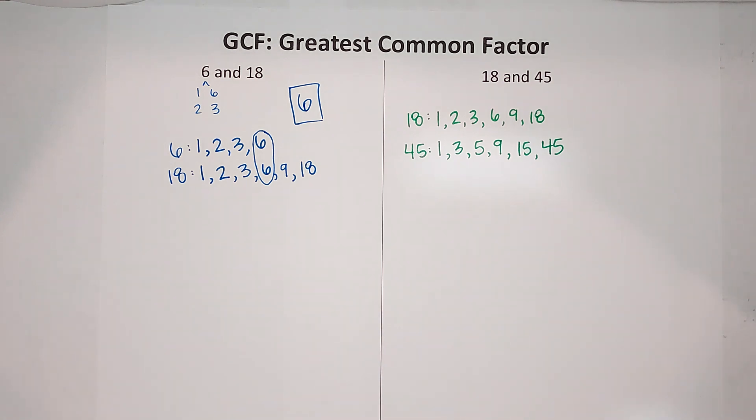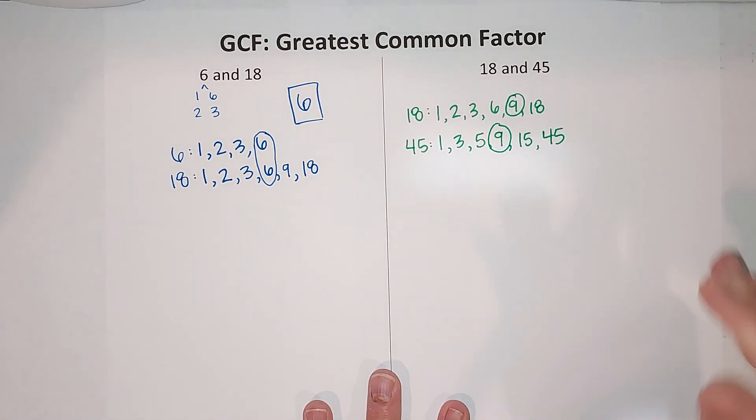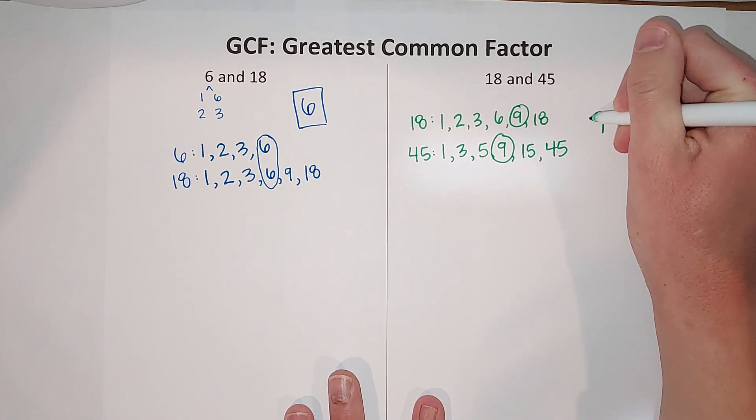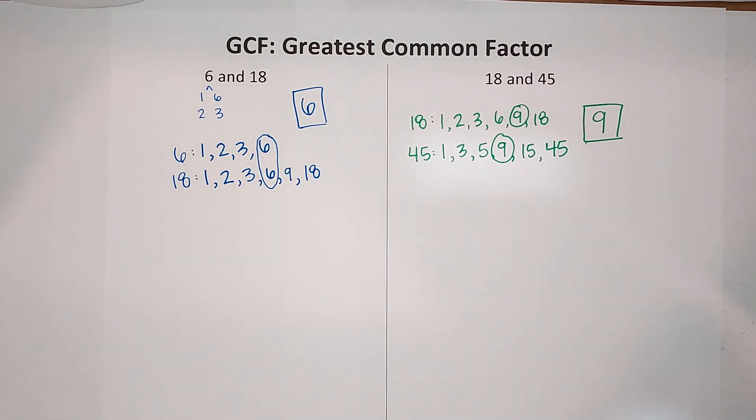There's the factors of 18 and the factors of 45. What is the biggest one they have in common? It is 9. So greatest common factor between 18 and 45 is 9. Hopefully that wasn't too bad, hopefully you can get your homework done.